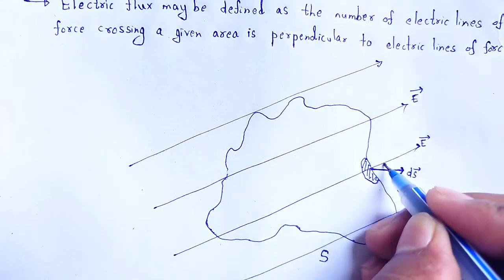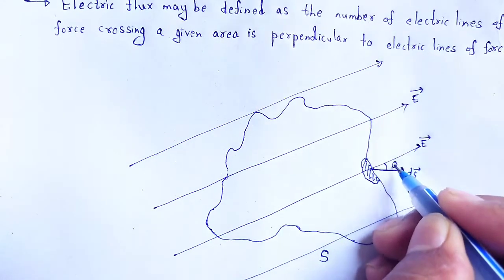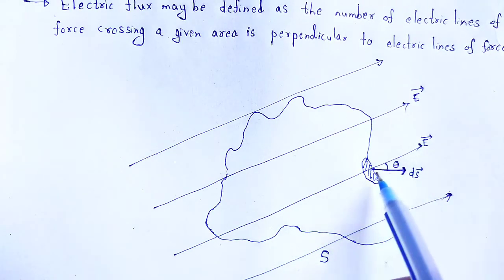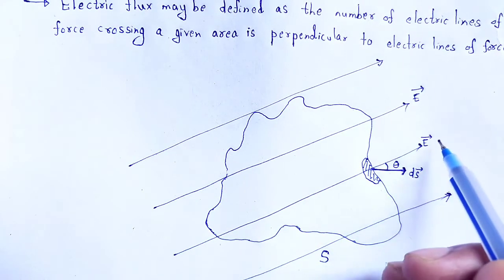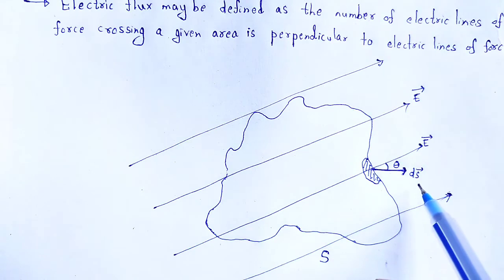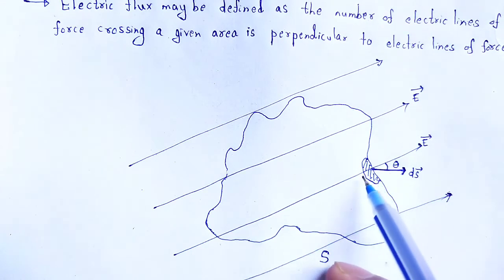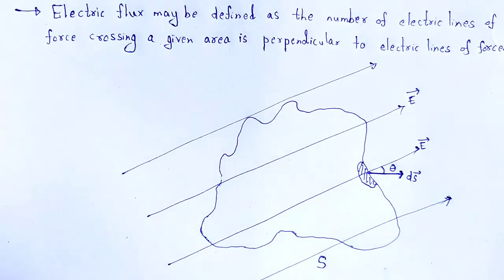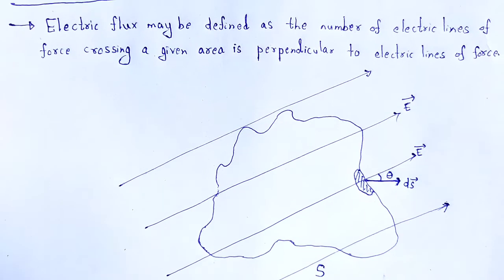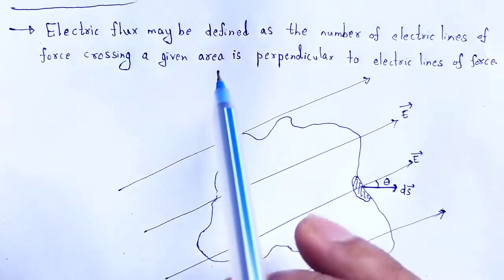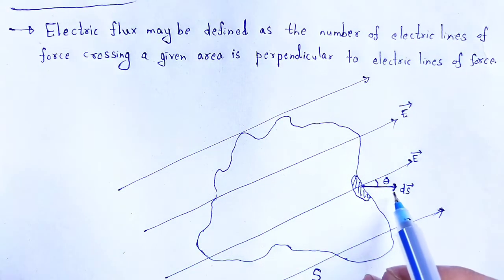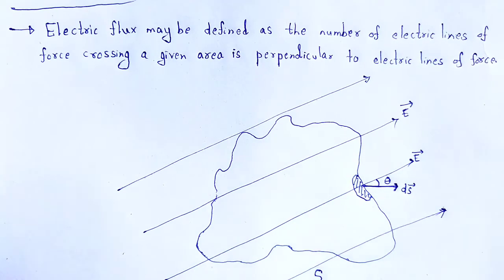The angle between dS and E is theta. Let us take the angle between the electric field and the surface area element dS as theta.